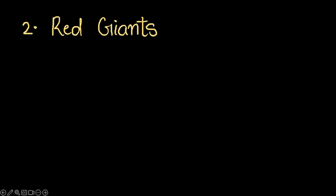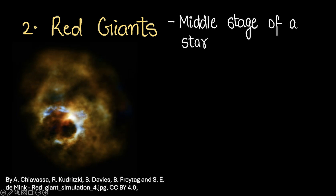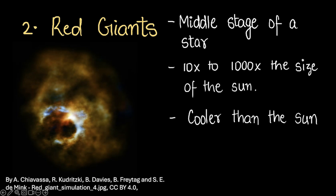The next type of star is a red giant. As the name suggests, it's really huge and red in color. A red giant is a star in its midlife — the middle stages of a star's life. A red giant is ten times to a thousand times the size of the Sun. But even though it's much bigger than the Sun, it's actually a lot cooler than the Sun. Interesting, right?